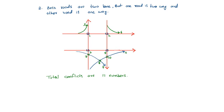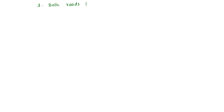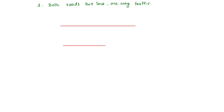Third case: both roads are two-lane and one-way traffic. We will draw the lanes — the directions are like this, one-way and one-way like this.